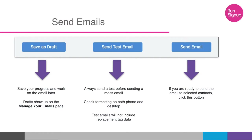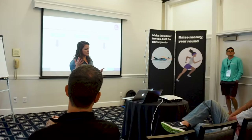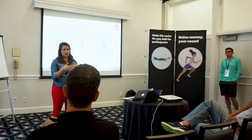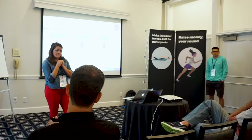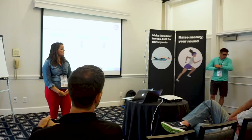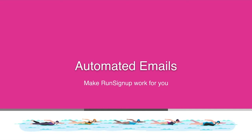Once you click send, a confirmation pops up showing the number of recipients in the list, the number of duplicates removed, excluded recipients, and a preview of the email. The scheduled time is based on the race's time zone — so if your race is set to central time and you put in a time, it'll send at that time in central time.